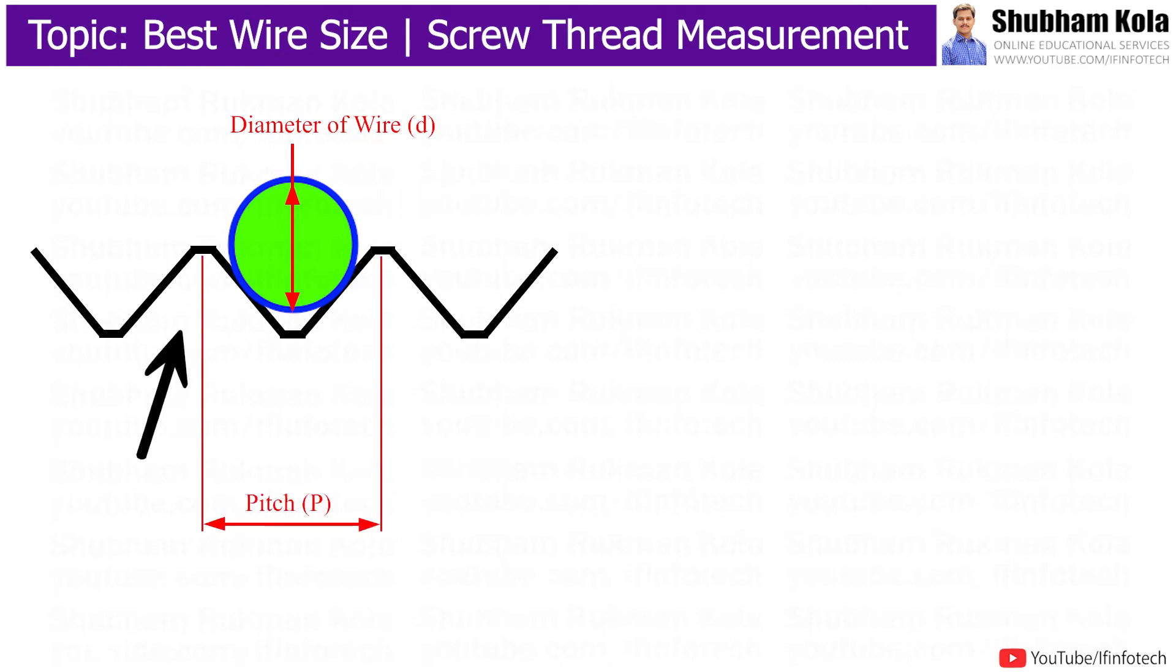where pitch is the distance from peak of one thread to the corresponding peak of next thread. And distance from center of wire up to center of thread is P by 2, that is half of pitch.